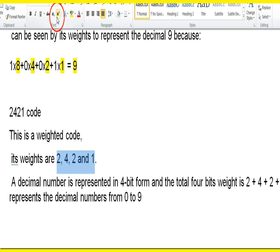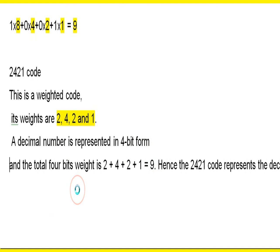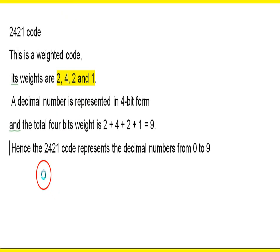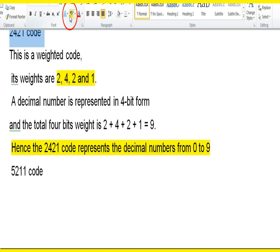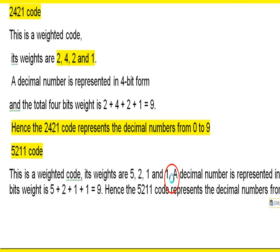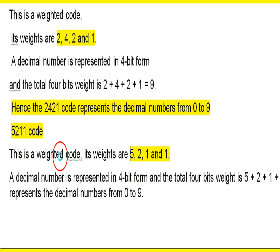Now we're coming to the 4221 code. It represents a number from 0 to 9. The next is the 5211 code — it's the 5211 weighted code.